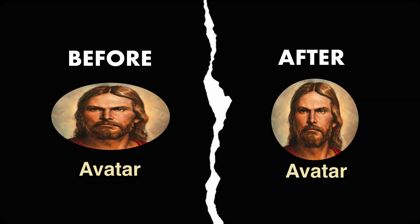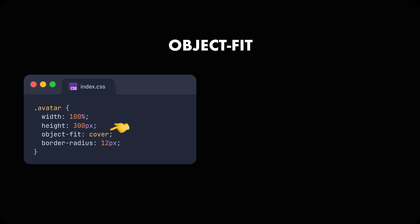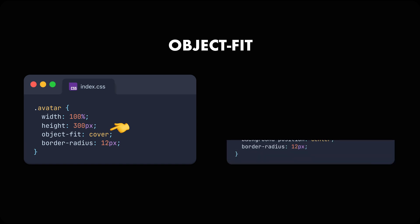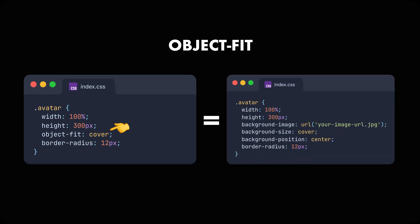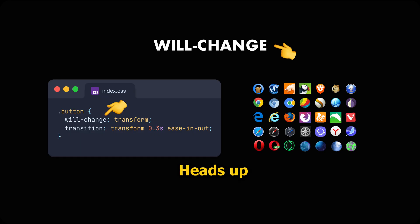The object-fit property is a great way to fit a picture inside the img tag without stretching. It works exactly like when you set a background-size on a div element.